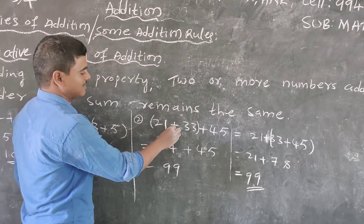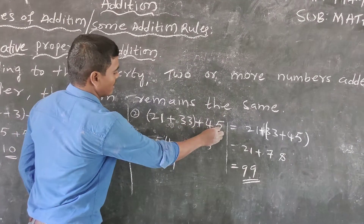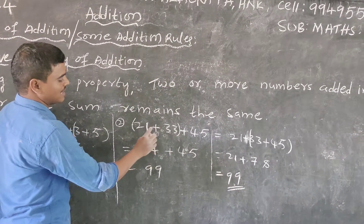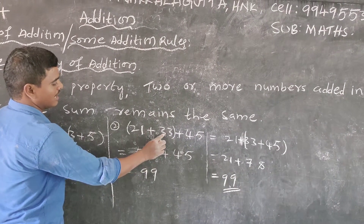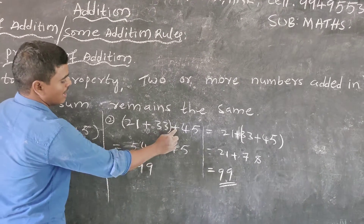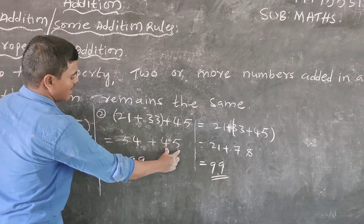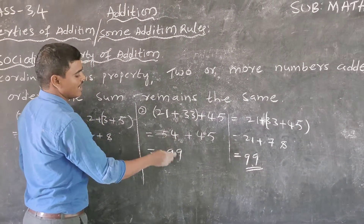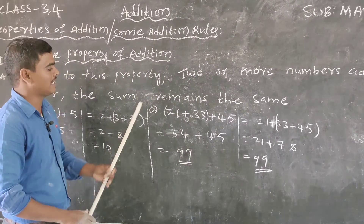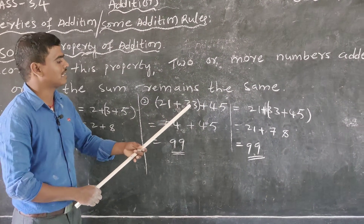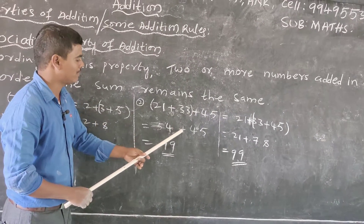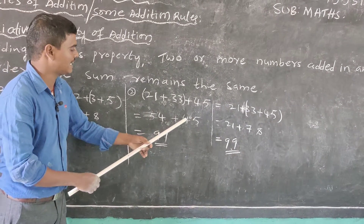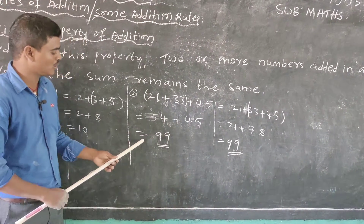Next example: (21 plus 33) plus 45. First, do the bracket: 3 plus 1 is 4, 3 plus 2 is 5, so 21 plus 33 equals 54. Then 54 plus 45: 5 plus 4 is 9, 4 plus 5 is 9 — so the answer is 99. Therefore 21 plus 33 plus 45 equals 99.